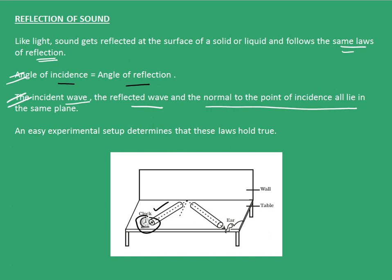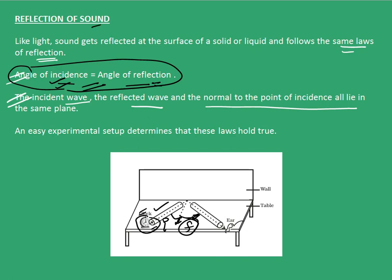Now the second tube is rotated starting from zero degrees with this normal. We initially hear a faint sound of the clock ticking. As we increase this angle, we find that when the angle of incidence i is equal to the angle of reflection f, we hear the clock ticking the loudest. When we increase this angle of reflection f beyond this criteria, the sound again starts to become faint. Hence, we say that angle of incidence is equal to angle of reflection in case of reflection of sound.